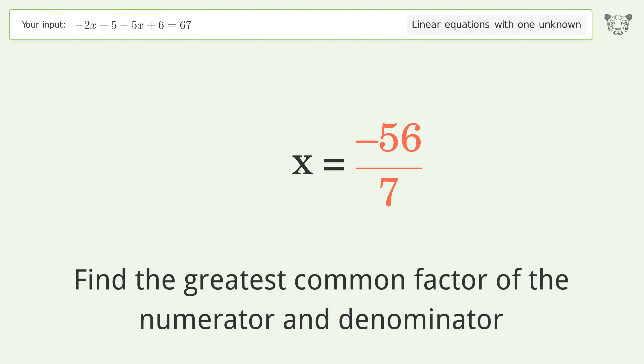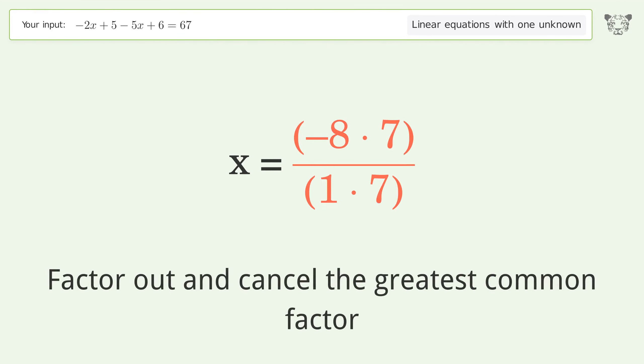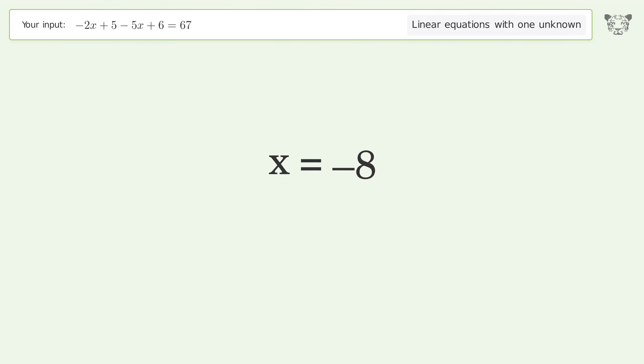Find the greatest common factor of the numerator and denominator. Factor out and cancel the greatest common factor. And so the final result is x equals negative 8.